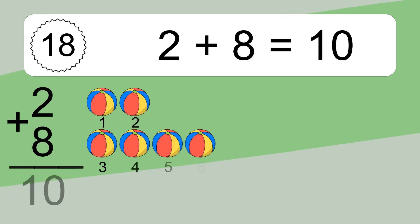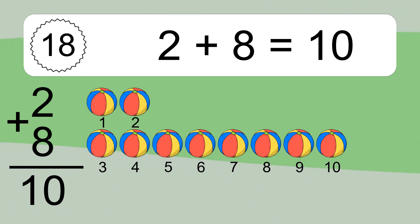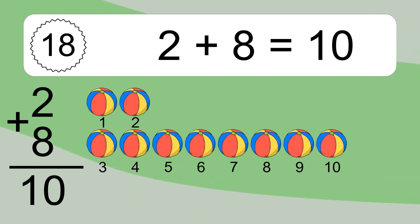2 plus 8 equals 10. Let's count it: 1, 2, 3, 4, 5, 6, 7, 8, 9, 10.